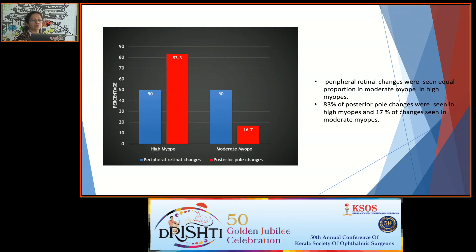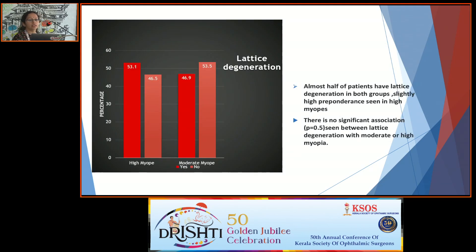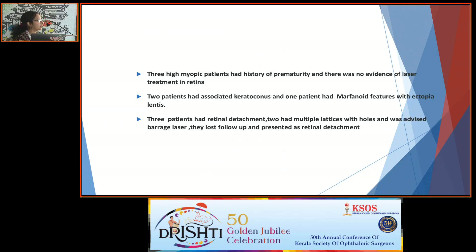Peripheral retinal changes were seen in almost equal proportions in moderate and high myopes. However, 83 percent of posterior pole changes were seen in high myopes and only 17 percent in moderate myopes. Regarding lattice degeneration, almost half of the patients in both groups had it, with a slightly higher preponderance in high myopes, though there was no significant association between lattice degeneration and degree of myopia. Other findings included three high myopia patients with a history of prematurity, two patients with bilateral colobomas, and one patient with Marfan syndrome with ectopia lentis. Three patients had retinal detachment.